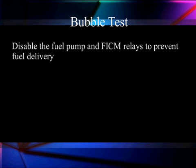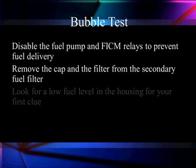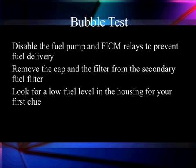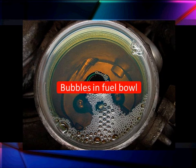Let's do the bubble test. The bubble test is we're going to look for bubbles in the secondary fuel filter. To do that, we disable the fuel pump and the fuel injector control module relay to prevent fuel delivery. We're going to take the cap off the secondary fuel filter and look at what's happening. We're going to look for low fuel in the housing — this is our first clue. If we have pressure coming in there, it forces fuel back through the pressure regulator and gives us low fuel because the air is in the top. Cranking the engine at this time might produce a few bubbles in the standpipe. We've got to have it higher than the standpipe because that's where it's coming out of — this is clue number two. We have leaking from one of our heads, and we can see the bubbles bubbling up.